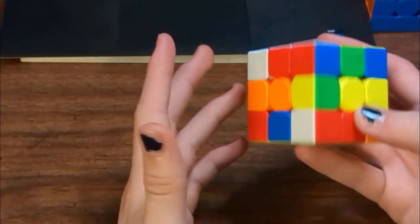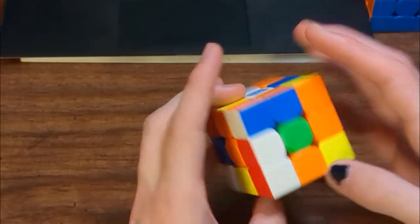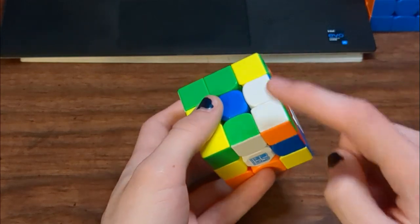Alright, so the scramble's kind of crazy, but it's actually pretty straightforward if you're a Neoline solver. So my bad edges are here, here, here, and here, and then my line edges are here and here.